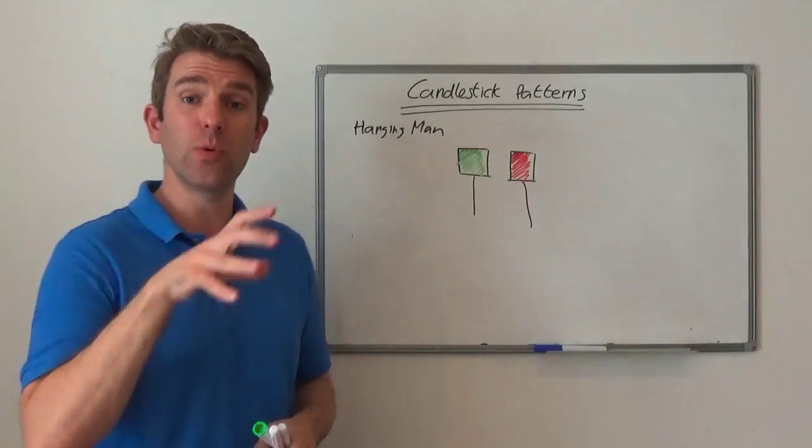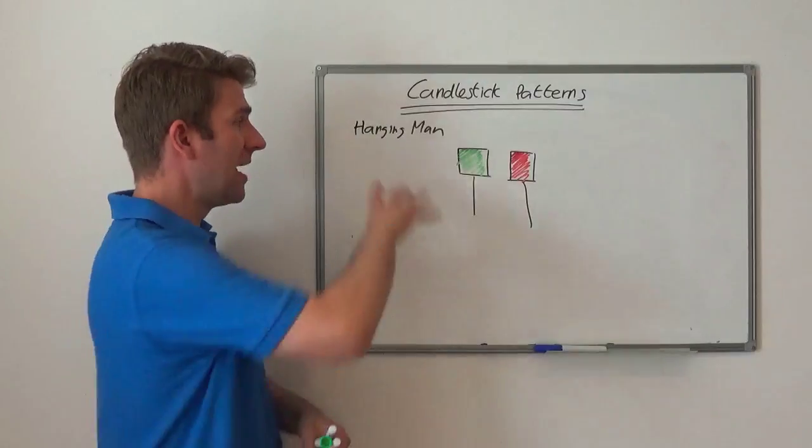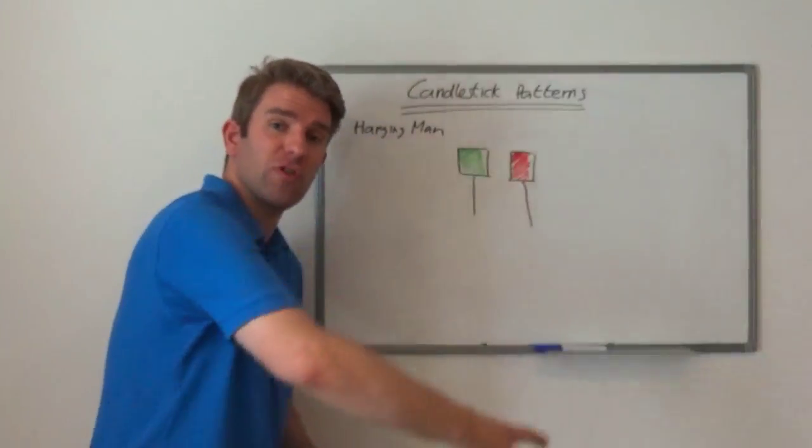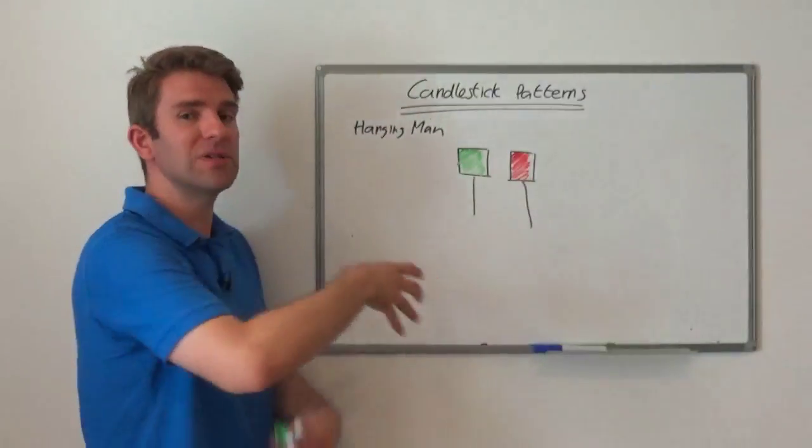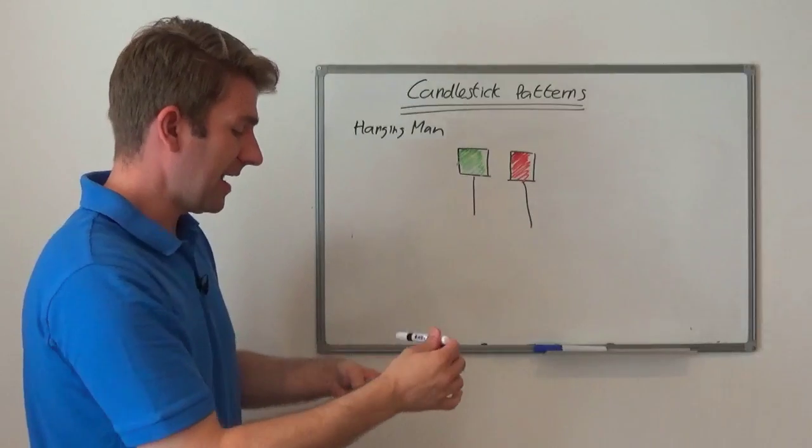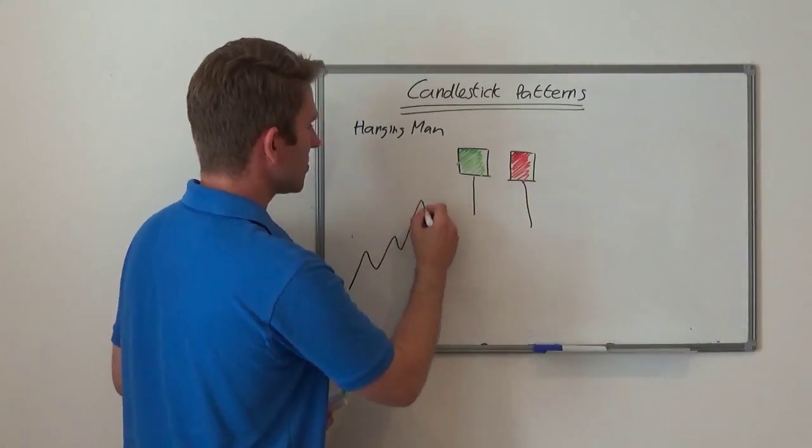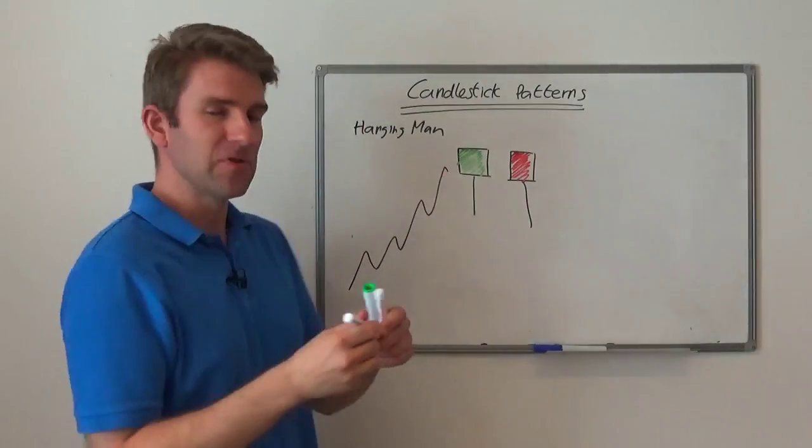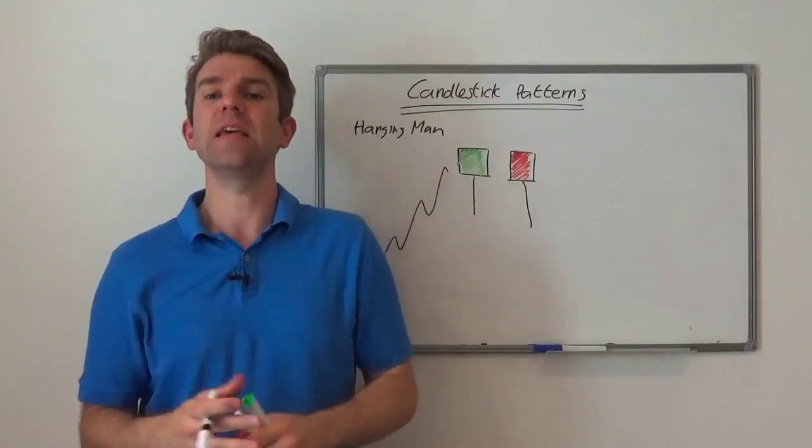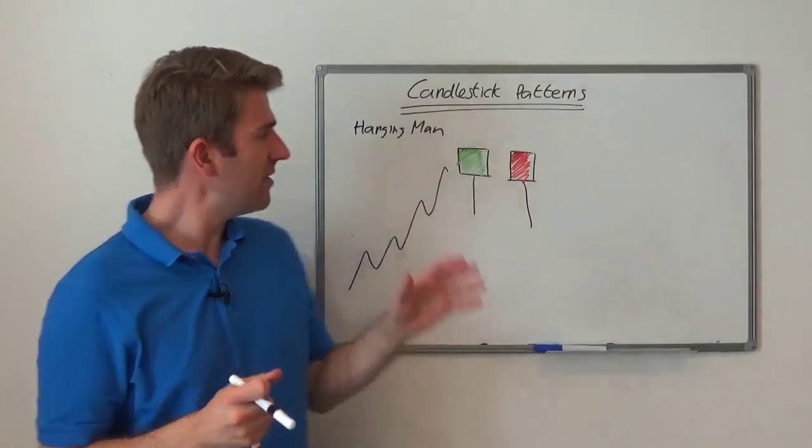A hammer is a reversal - we've got the downtrend, we get this pattern at the lows and it makes sense. A hanging man is that you've got a push to the upside and then you get this pattern. So what is the theory behind it?